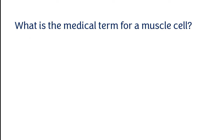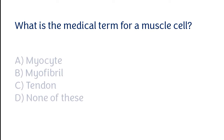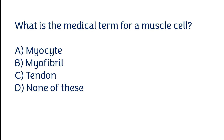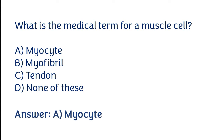What is the medical term for a muscle cell? Options: Myocyte, Myofibril, Tendon, or None of these. The correct answer is option A — Myocyte is the medical term for a muscle cell.